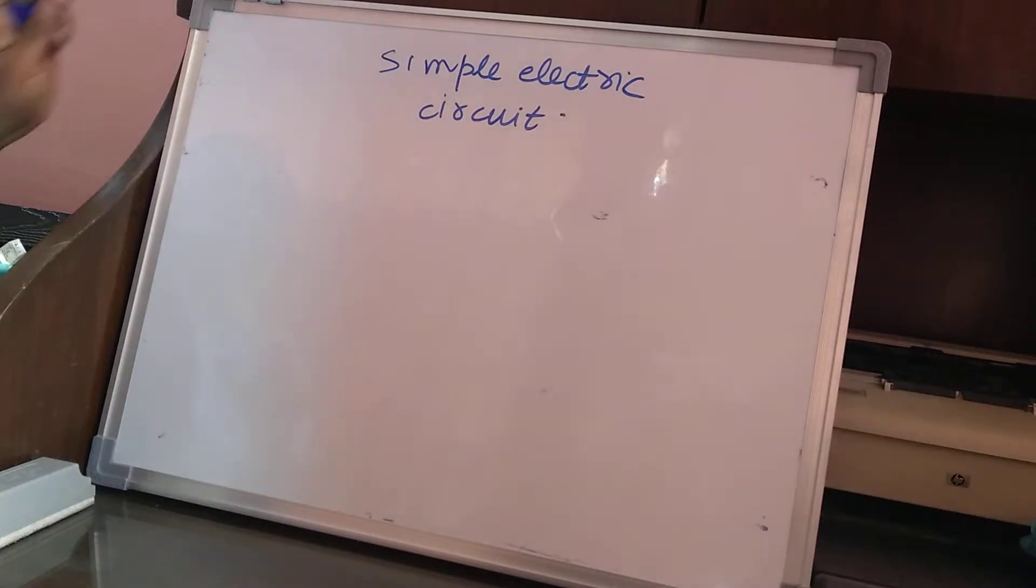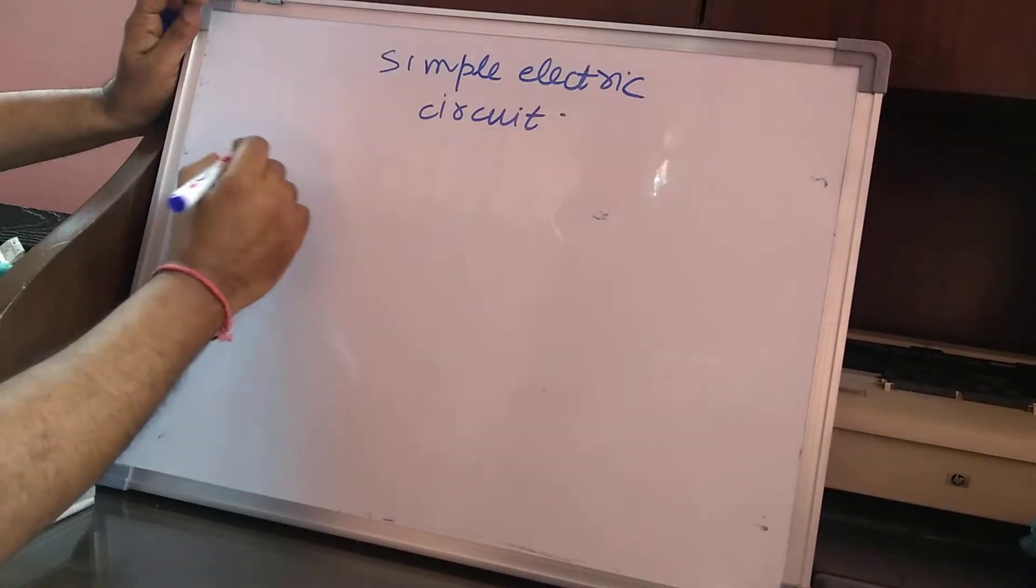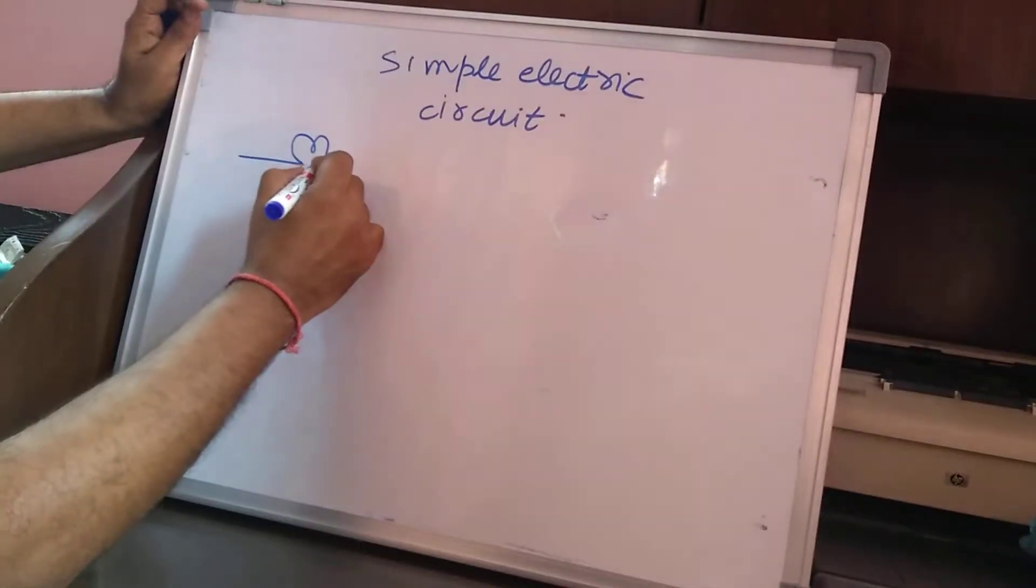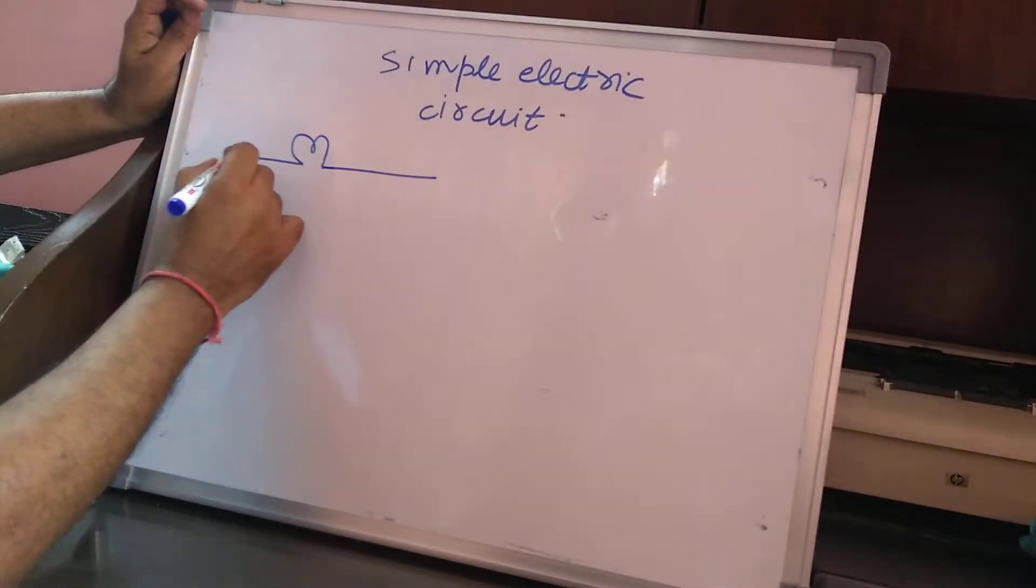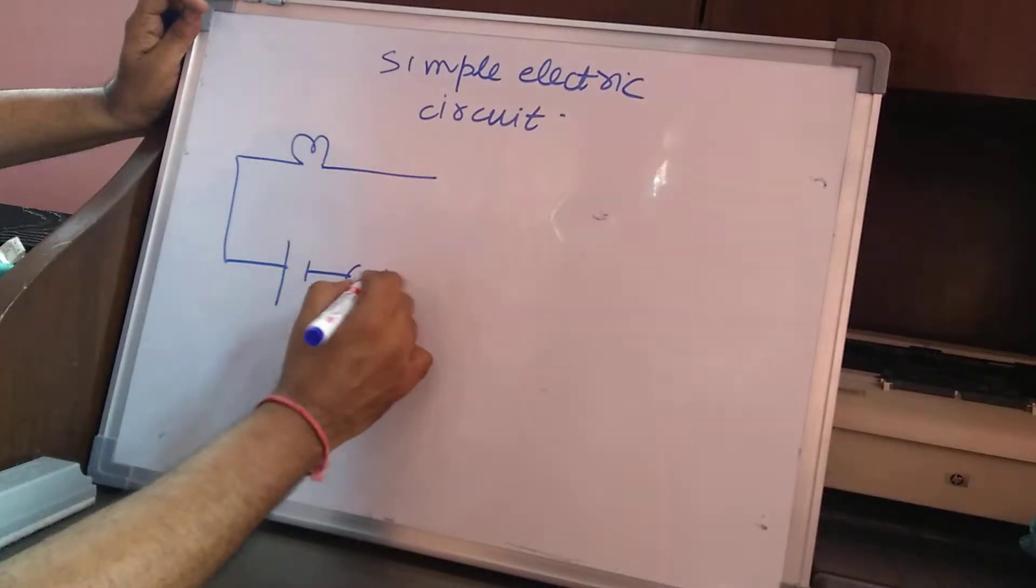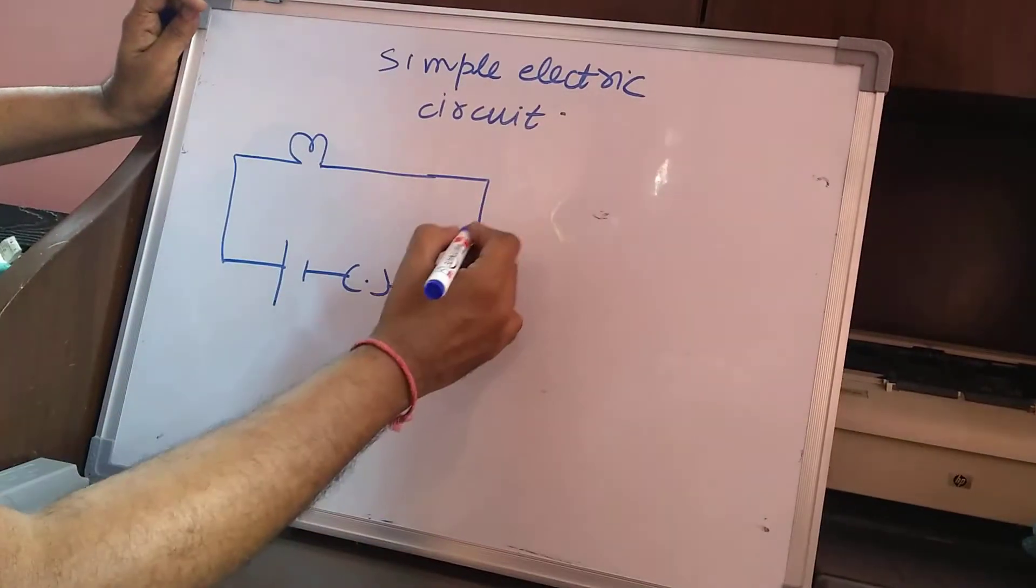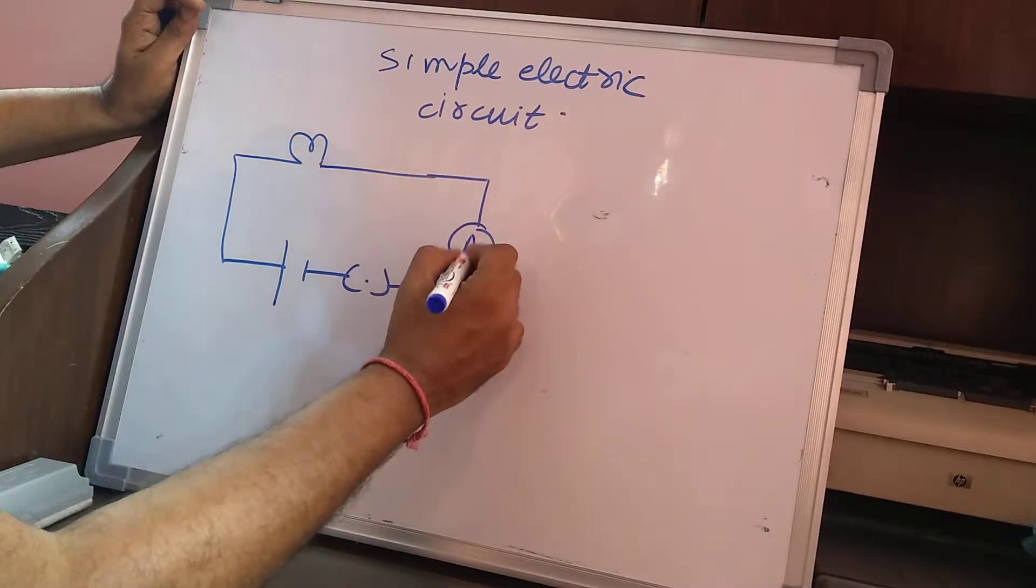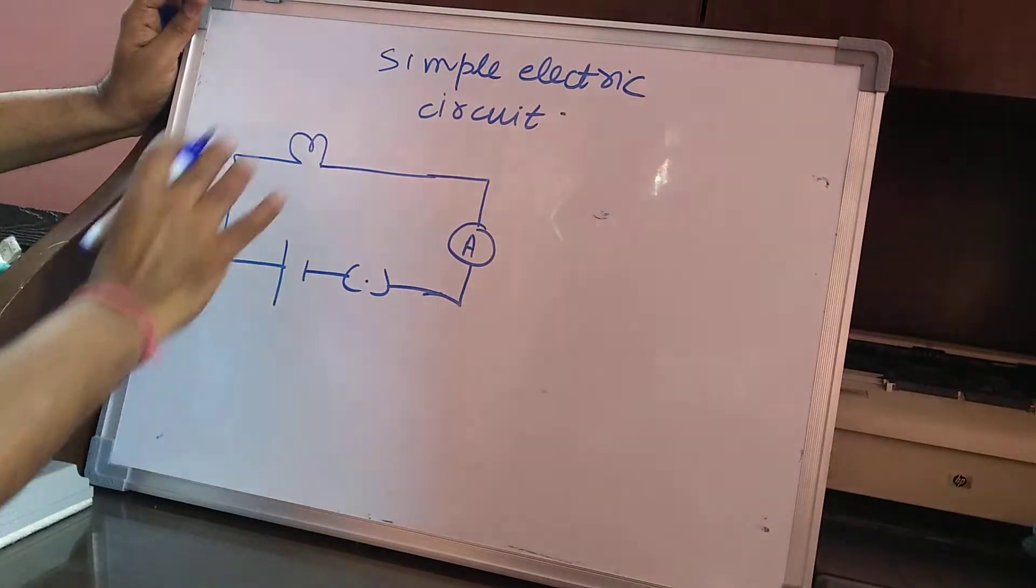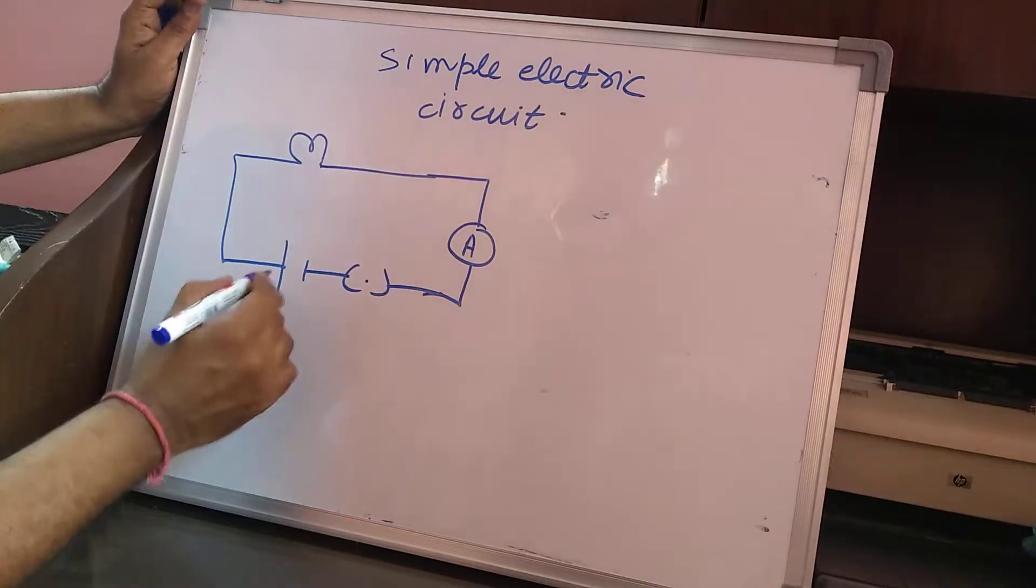A simple electric circuit can be made by connecting a few circuit elements like a bulb or lamp connected with a cell and a key. We can also connect a device called ammeter which is used for measuring current. All of them will represent a simple electric circuit.